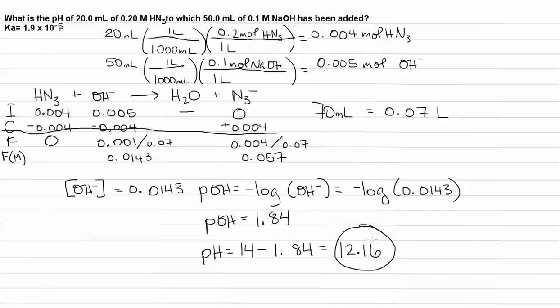And this makes sense. We're after the equivalence point. We have excess strong base. The strong base is going to make our pH relatively high. So, a pH of 12.16 makes sense.